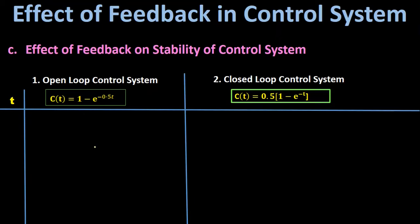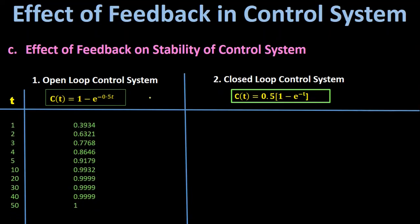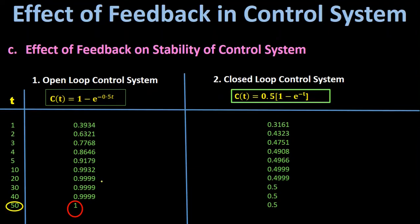We now draw an observation table for both open-loop and closed-loop control systems, taking values of T equal to 1, 2, 3, 4, 5, 10, 20, 30, 40, and 50 seconds. Comparing both results, in the open-loop control system the steady state value of 1 is reached at T equal to 50 seconds, while in the closed-loop control system the steady state value of 0.5 is reached at T equal to 30 seconds. This means the closed-loop control system reaches steady state faster than the open-loop control system.